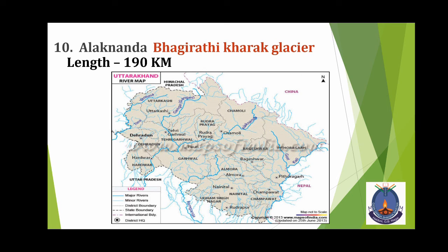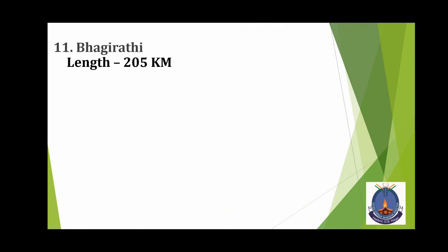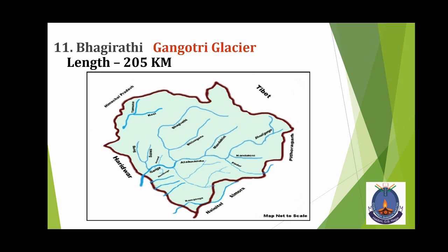Bhagirathi. इसका origin कहां से होता है? Gangotri Glacier से। Gangotri Glacier से Ganga का भी origin था। इसकी length 205 km है। Gangotri से पहले Bhagirathi निकलती है, फिर आगे जाके Ganga में मिल जाती है।